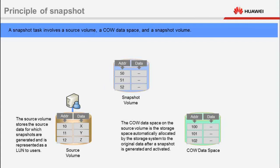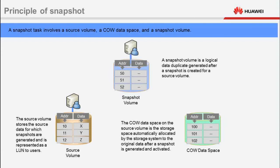The COW data space on the source volume is automatically allocated by the storage system after a snapshot is generated and activated. The snapshot volume is a logical data duplicate generated after a snapshot is created for the source volume. The snapshot volume is an independent storage space, and it can be mapped to and accessed by a host, represented as a snapshot LUN to users.